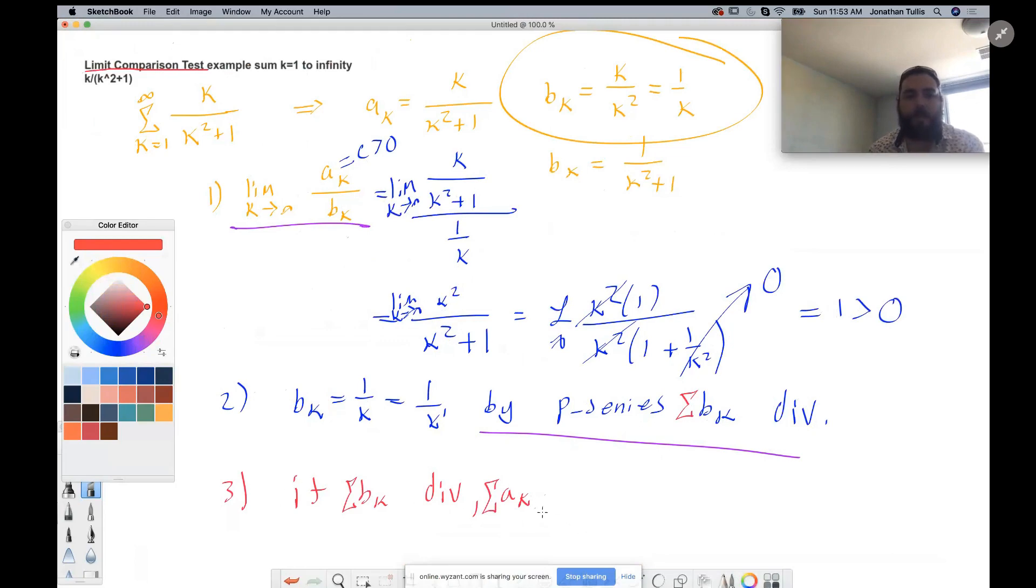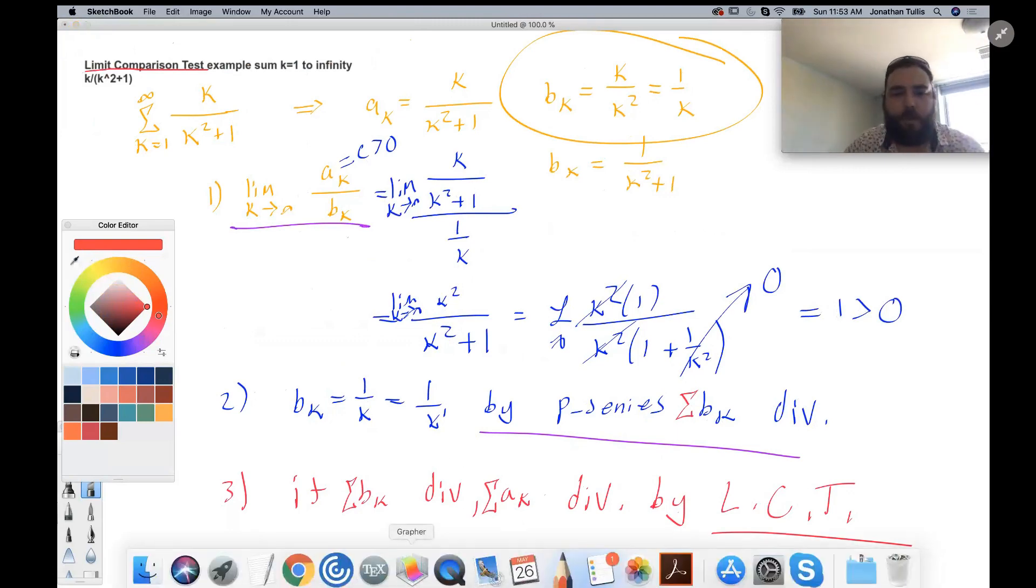If the sum bk diverges, then the sum ak also diverges by limit comparison test. So you need to identify all of these things throughout it in order to get full credit on a test. But that's how you do it for limit comparison tests.